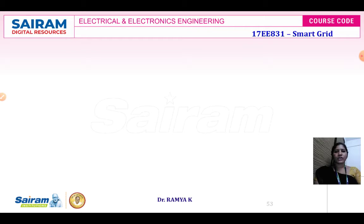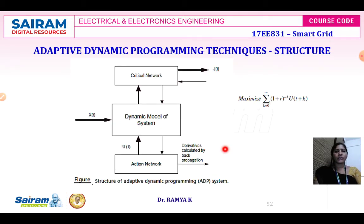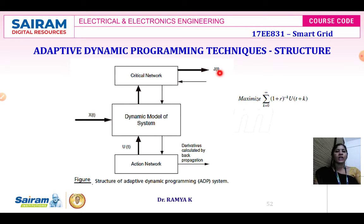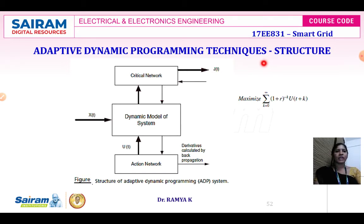Looking at the block diagram structure of adaptive dynamic programming, the critic network has output j(t), which is approximated to the cost-to-go function. This j(t) is the utility function derived from applying the principle of optimality — the Bellman equation of dynamic programming. This approach is referred to as heuristic dynamic programming (HDP) in the ACD framework.